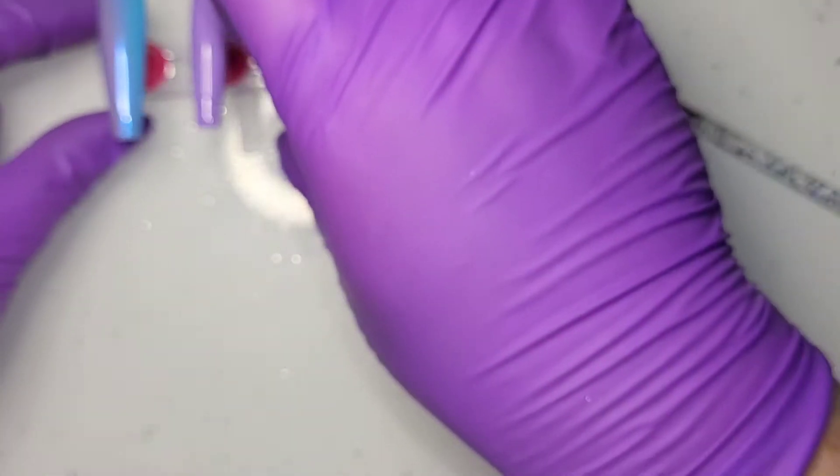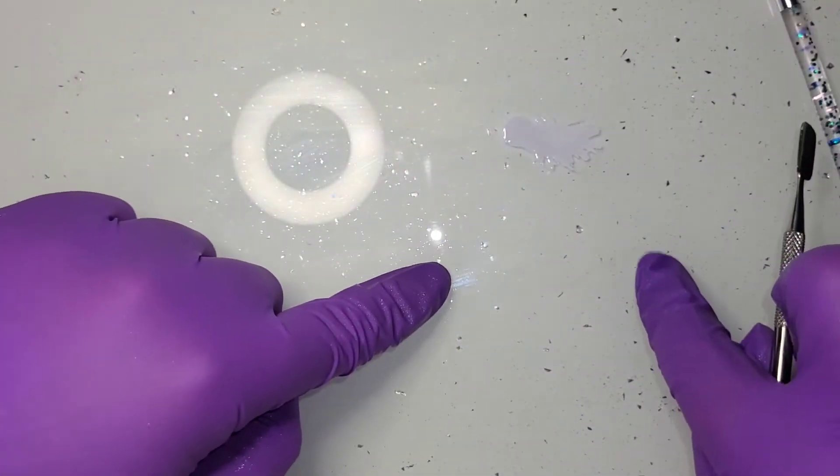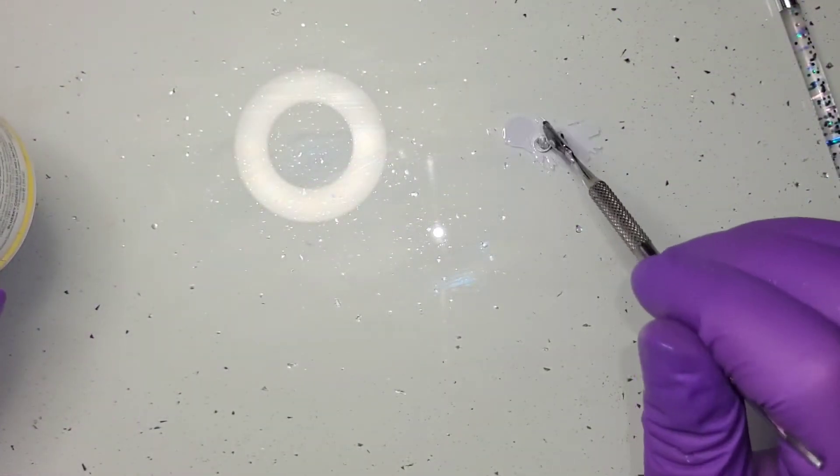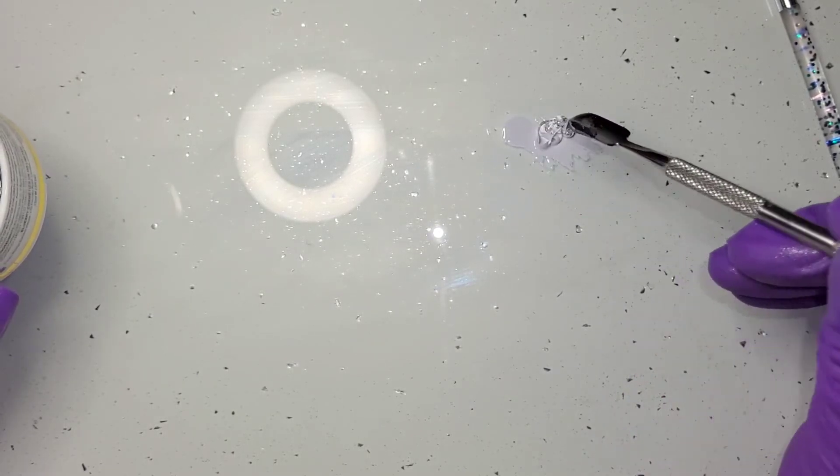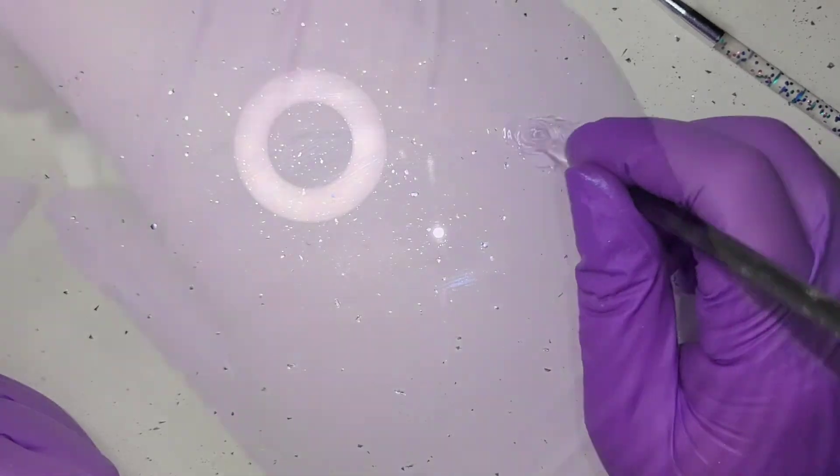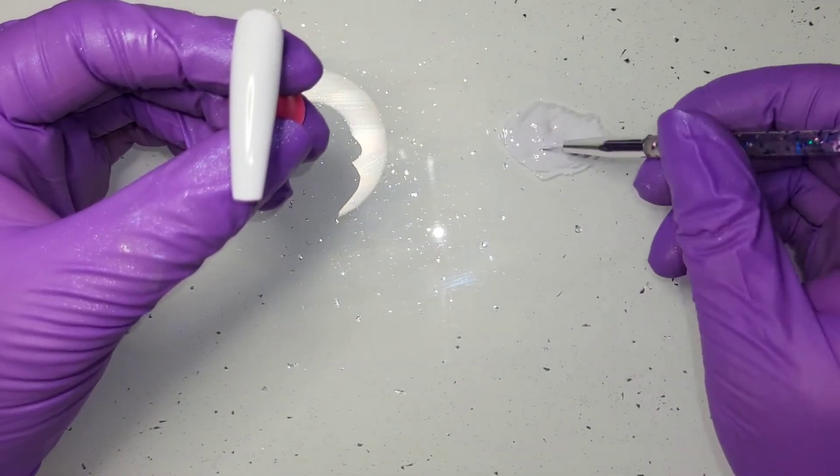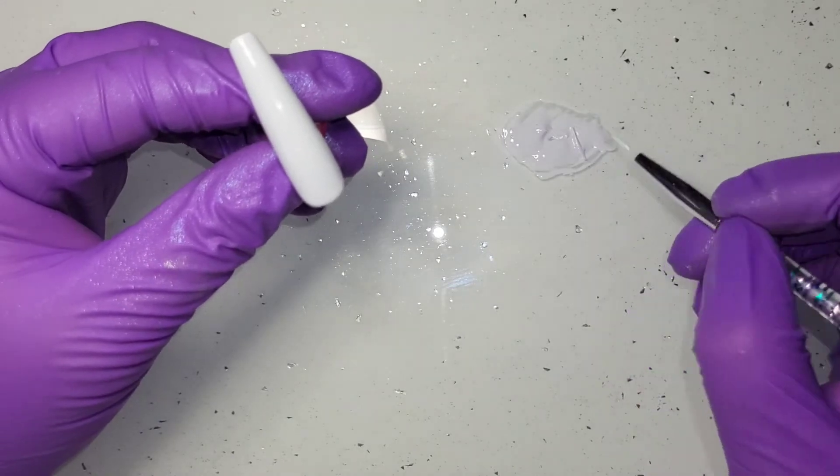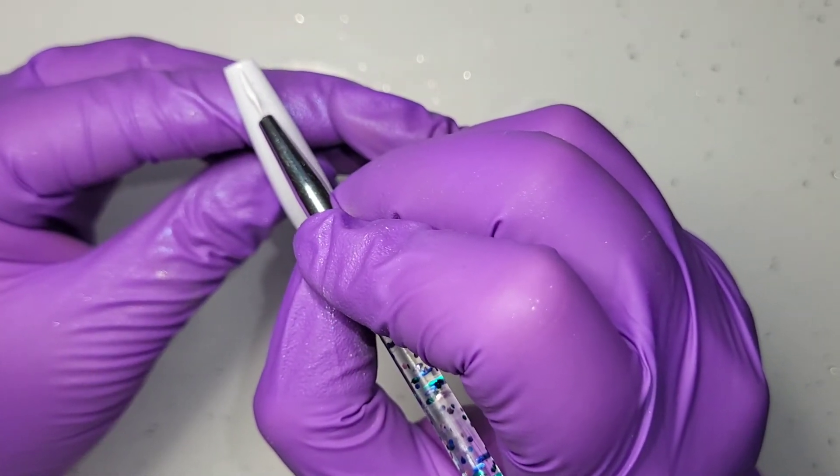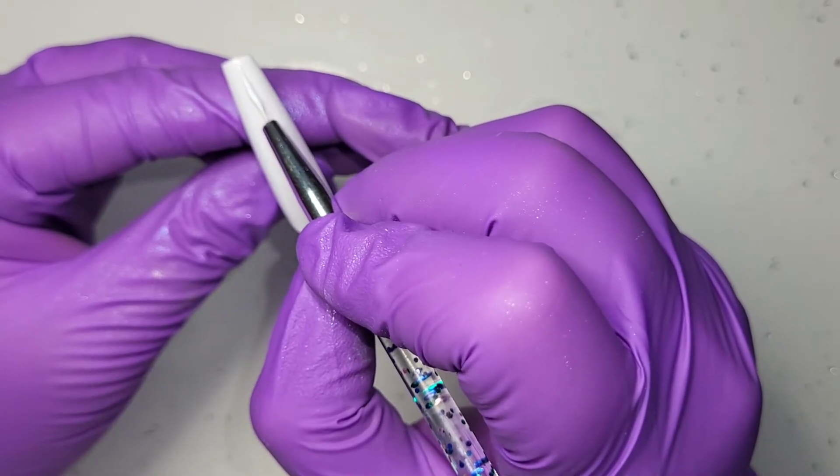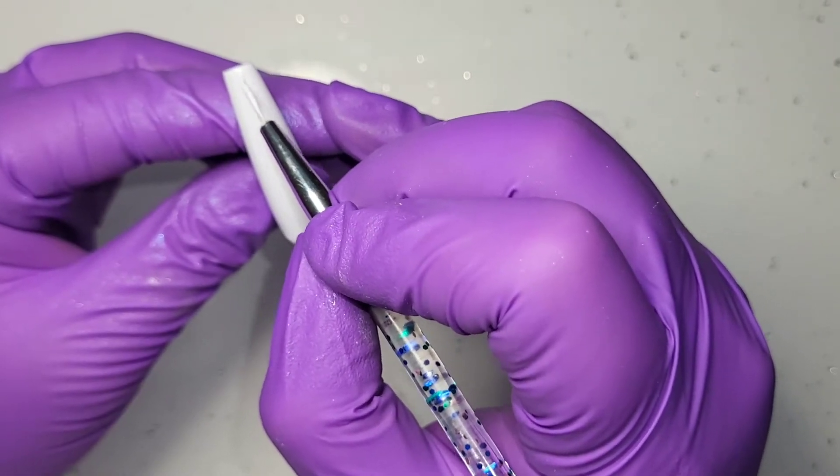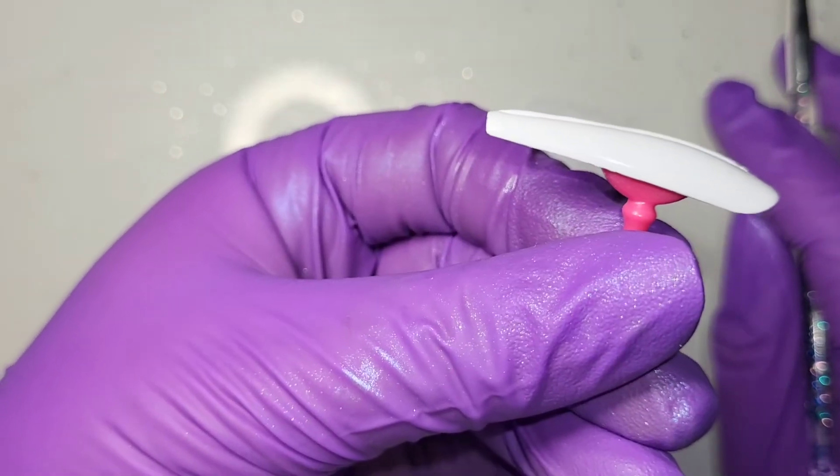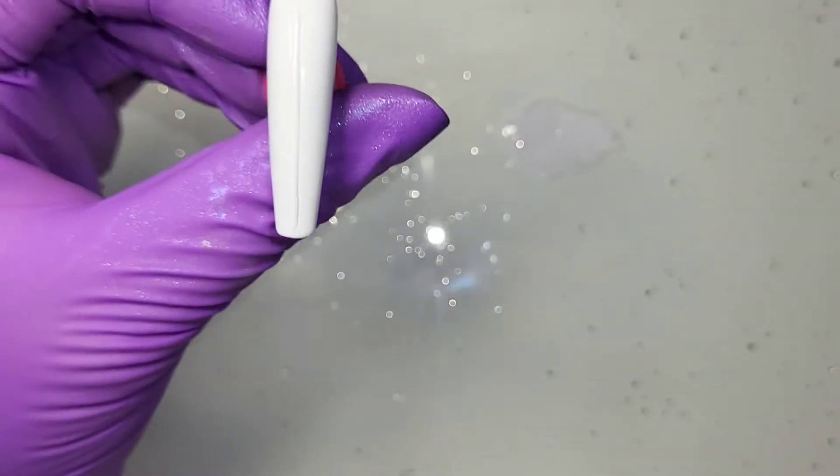That one is done. Let me give that one a top coat. With the white polish on the palette, I'm going to get a little bit of builder gel. On the white one, I'm going to create a shell pattern. We'll do one in the middle. You can see the height on that. We're going to put that in the lamp for a flash cure.